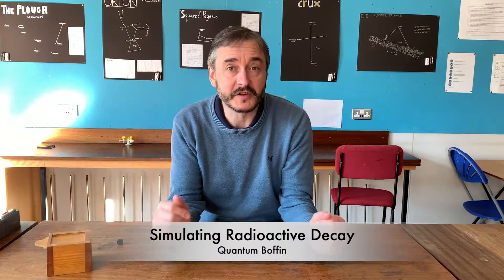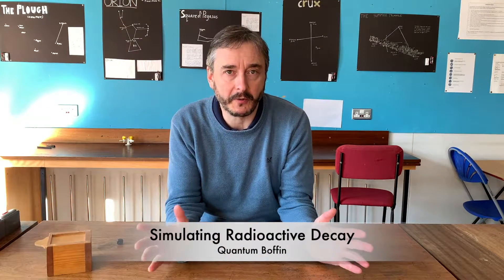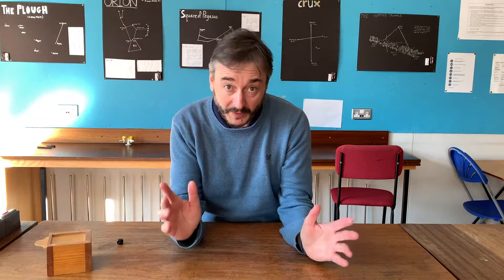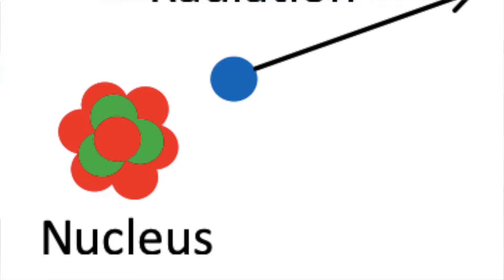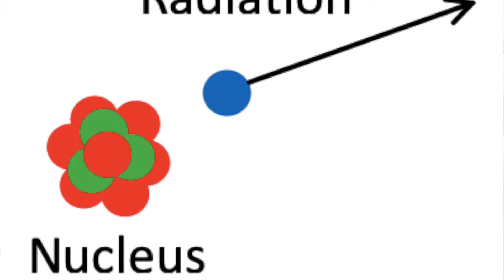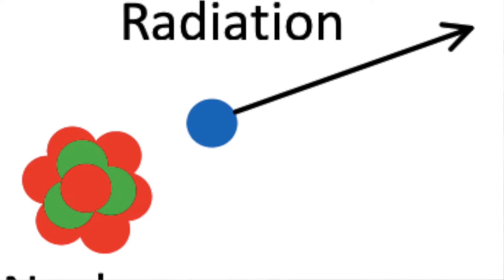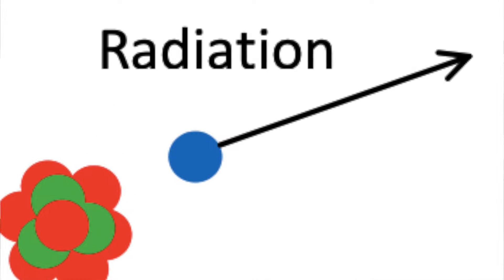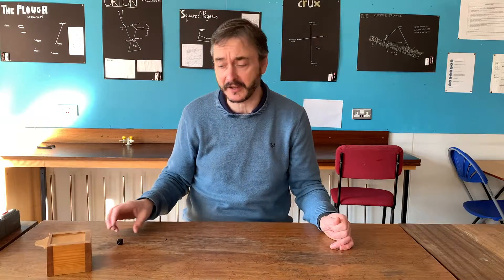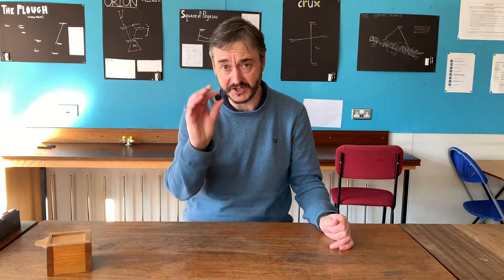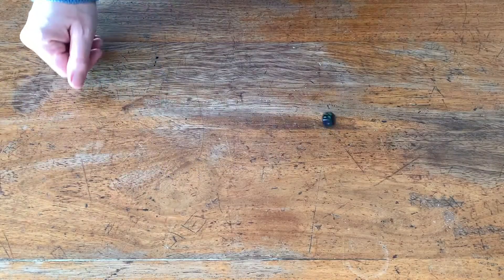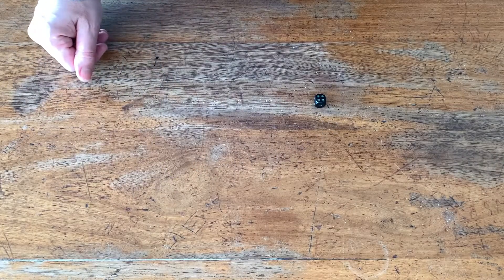Radioactive decay is a random phenomenon. What that means is that the decay of one individual nucleus can't be predicted. It happens entirely at random, just like the shake of a dice.